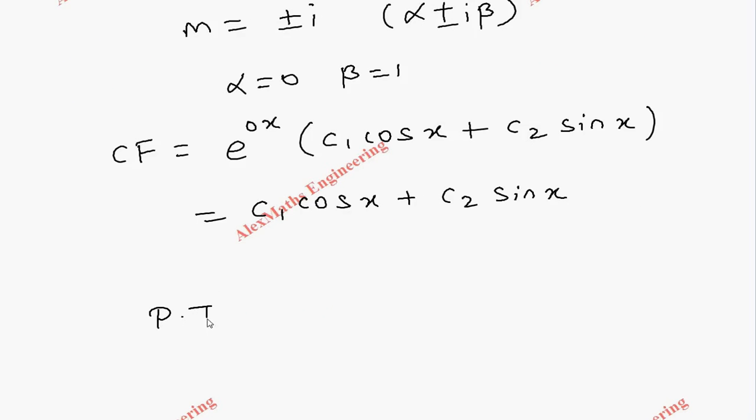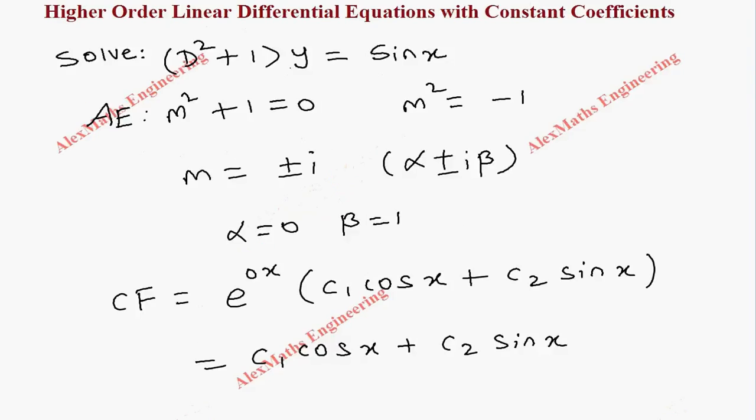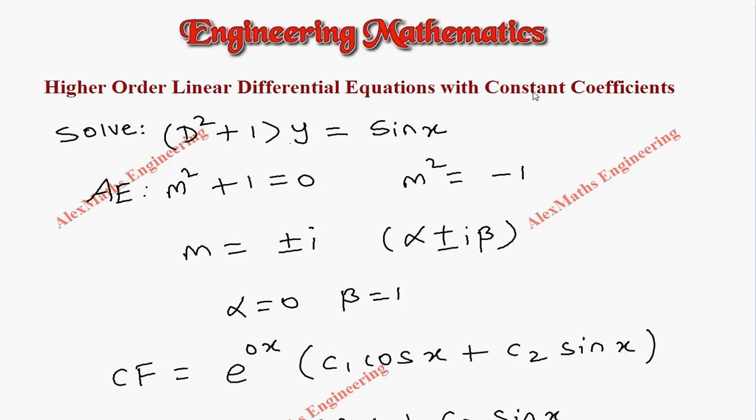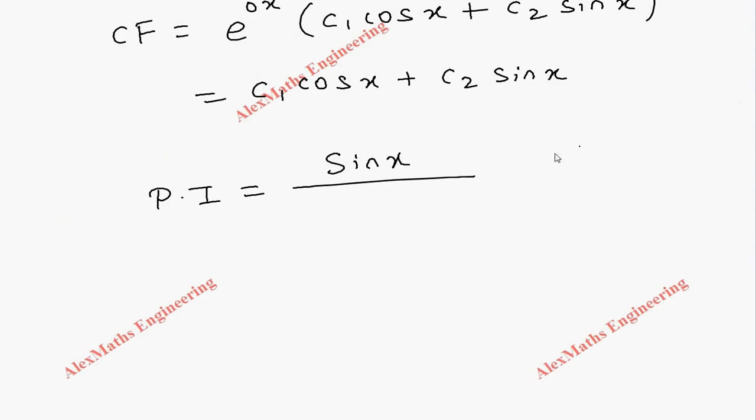On the right-hand side we have sin x, so we write sin x divided by D² + 1. As per the procedure, since the exponent of x is 1, we substitute D² with 1², but with a minus sign outside.